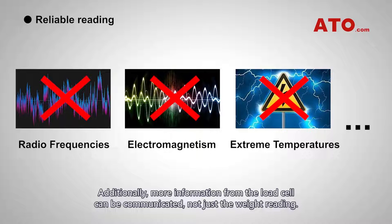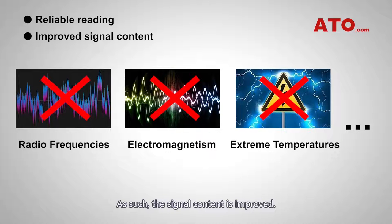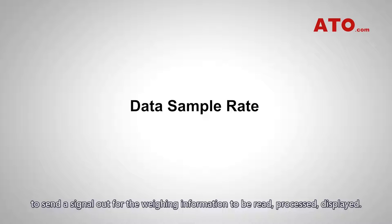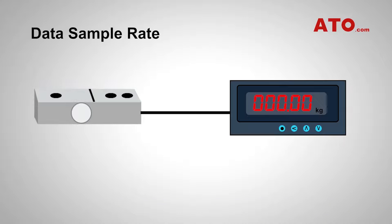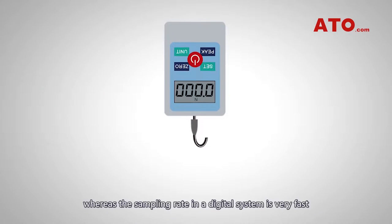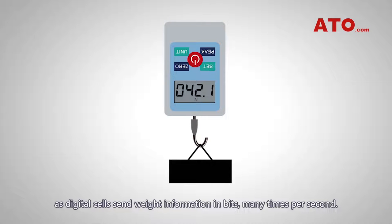Additionally, more information from the load cell can be communicated, not just the weight reading. As such, the signal content is improved. Data sample rate is basically the time it takes for the load cell to send a signal out for the weighing information to be read, processed, or displayed. Analog load cells provide weight information continuously in real time, whereas the sampling rate in a digital system is very fast, as digital cells send weight information in bits many times per second.